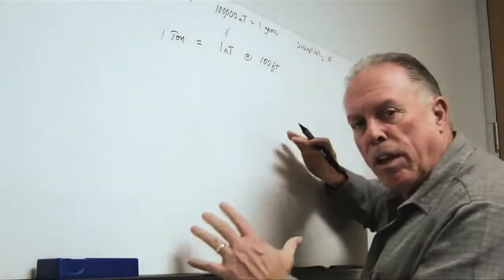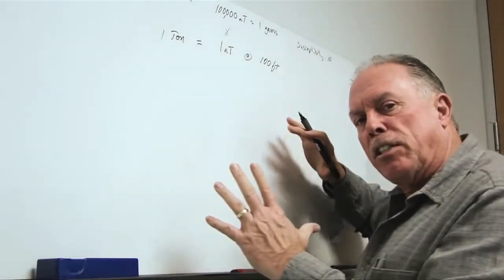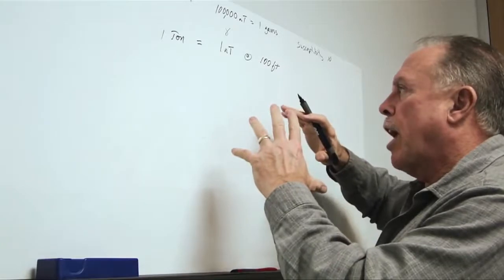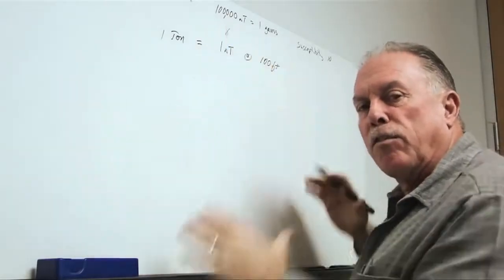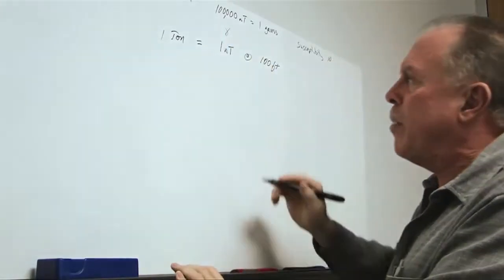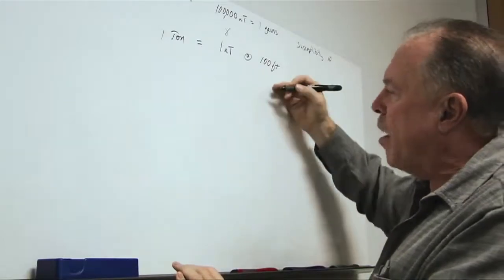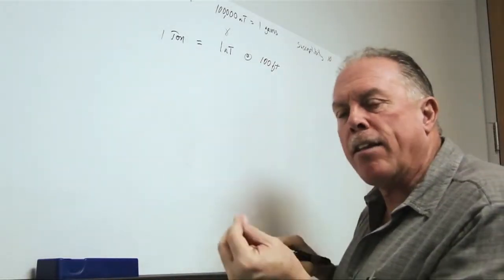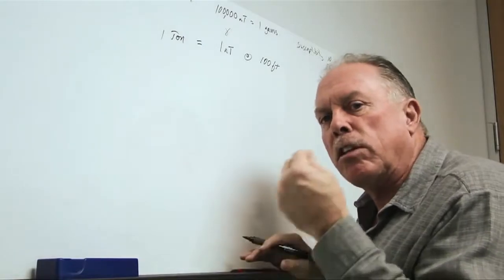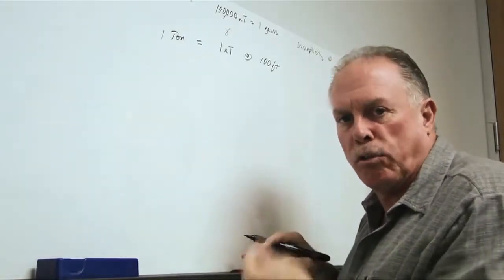The field that we showed in the previous section actually falls off as the inverse cube with distance. What does that mean? Well, that means when we double the distance, we only have one-eighth of the field intensity or the distortion to the field.